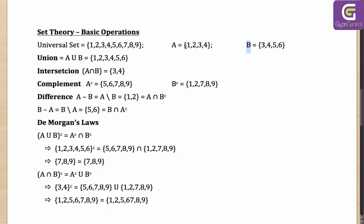The intersection contains elements which are in both A and B. Since 3 and 4 are in both, A intersection B is {3, 4}. The complement contains all elements not in a given set. A complement is {5, 6, 7, 8, 9}, and B complement is {1, 2, 7, 8, 9}.